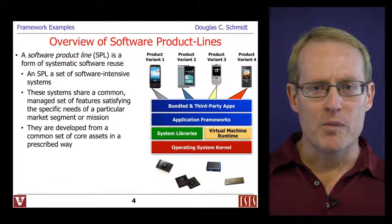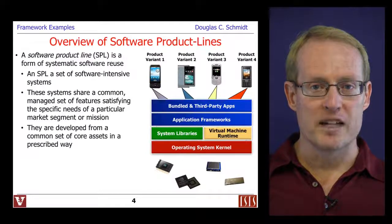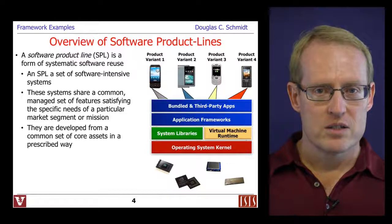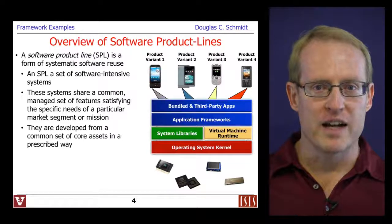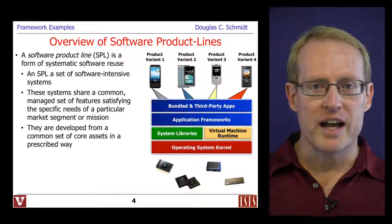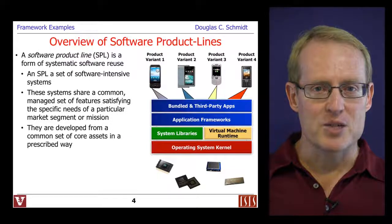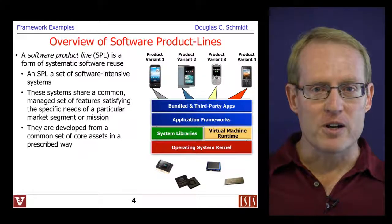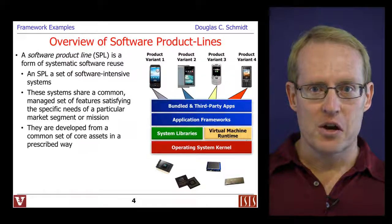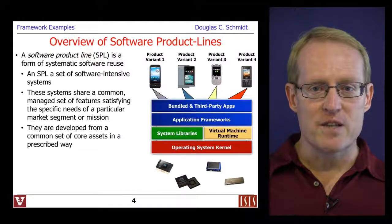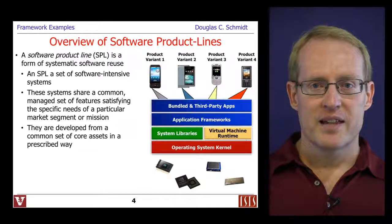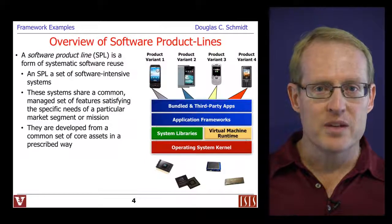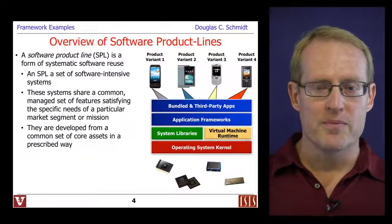Before we talk about scope, commonality, and variability analysis, let's first give a quick summary of what a software product line is. A software product line is a form of systematic software reuse. It's basically a set of software intensive systems that share common managed sets of features that satisfy specific needs of a particular market segment or mission or domain.